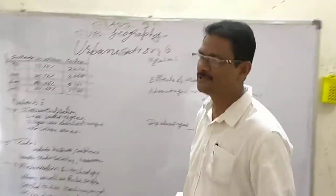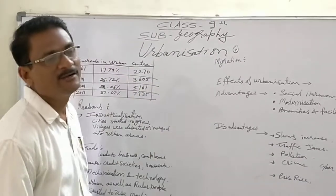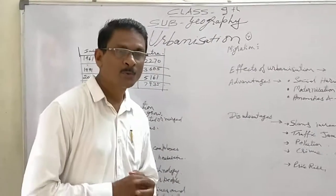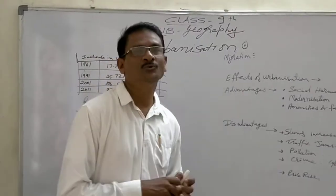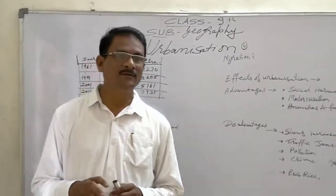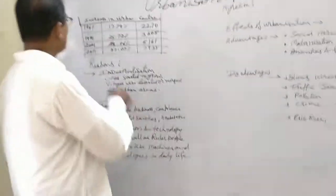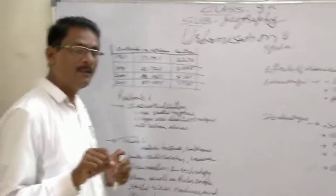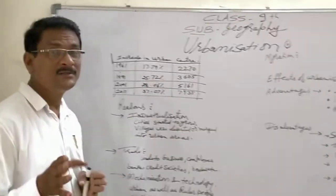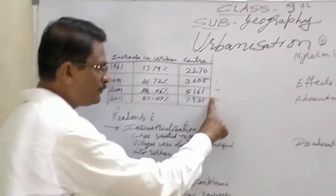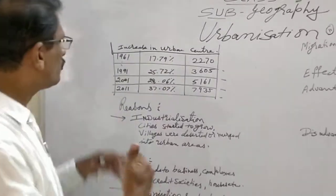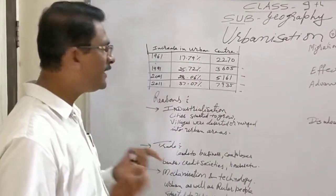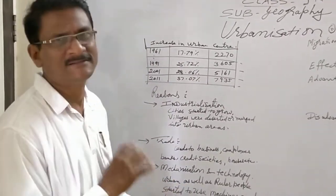Yesterday we saw in the previous lecture how urbanization started to increase in India. We studied that in 1961 there were only 17.79% of people in urban centers. Urban centers in India in 1961 recorded by the government were 2270. Slowly after that up to 1991 it rose to 25%. That means there was a rise of only 8% in 30 years.